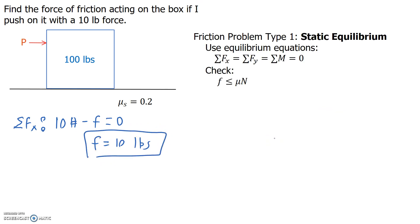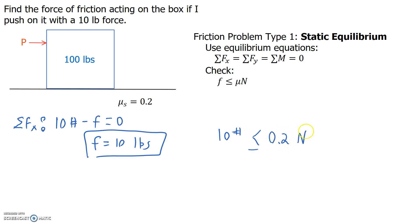This brings me to the first type of friction problem: static equilibrium. If we determine that the box is in static equilibrium, we need to use the equilibrium equations, and then check that the friction force is less than or equal to mu times N. Here we have ten pounds is less than or equal to 0.2 times the normal force — so this box is in static equilibrium and is not moving.